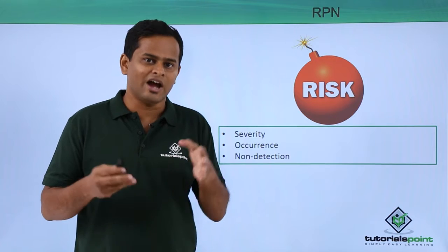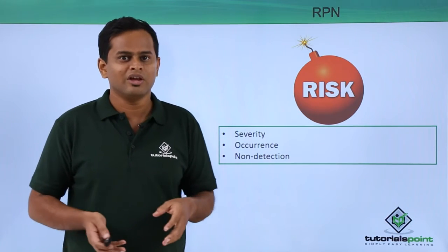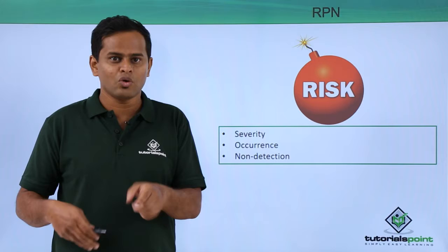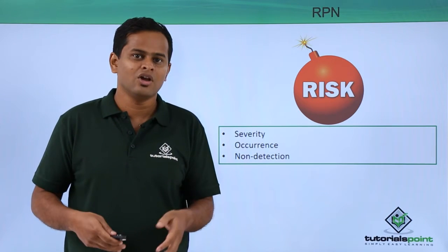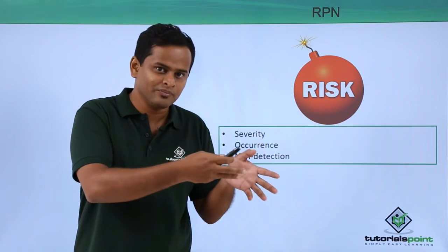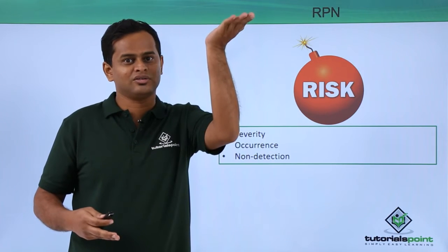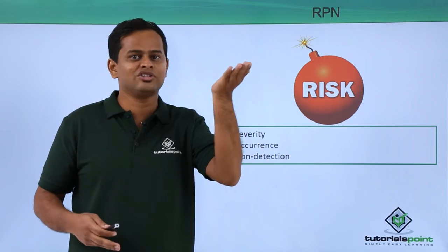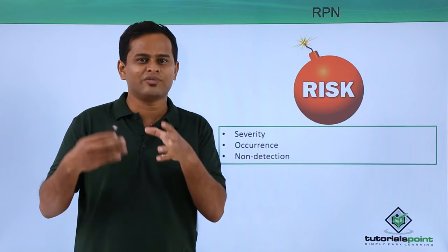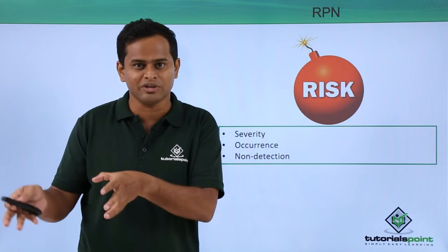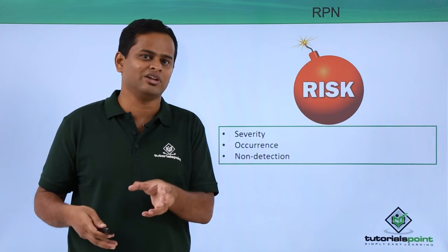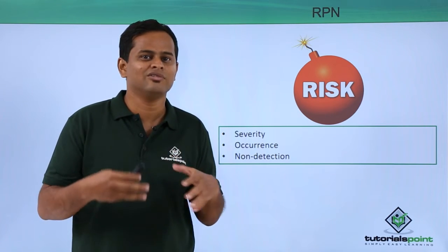Now we are going to understand RPN — that means the Risk Priority Number. It means: what is the severity level of the failure mode, what is the occurrence level, and the non-detection levels. From the severity level — if there is a threat to human life, the severity level will be very high. The range can be from 1 to 10; the higher the severity, the ratings will be closer to 10. Occurrence means what is the frequency of this particular failure mode happening — if it happens in every manufacturing cycle, the occurrence value will be very close to 10.